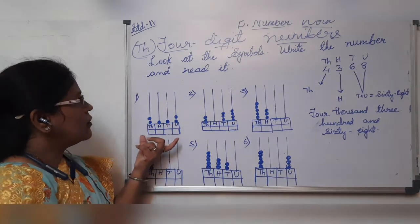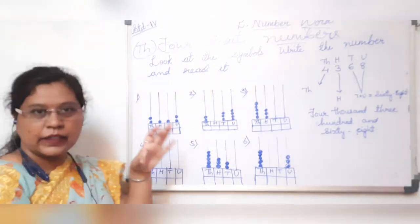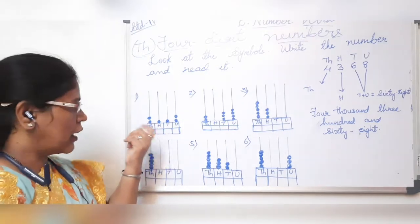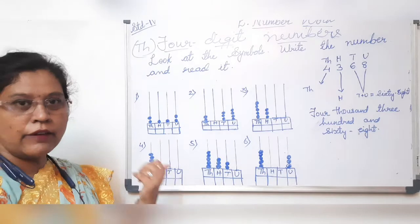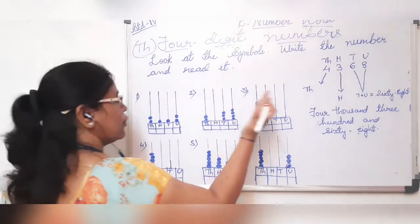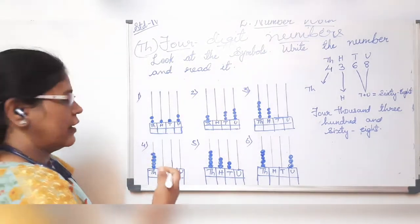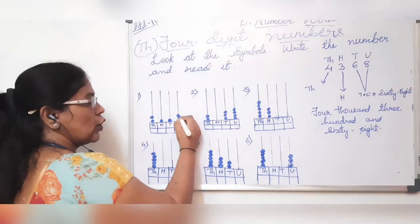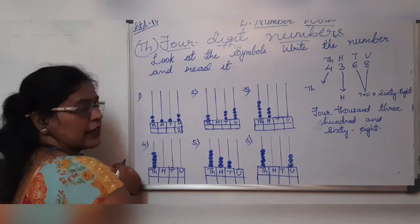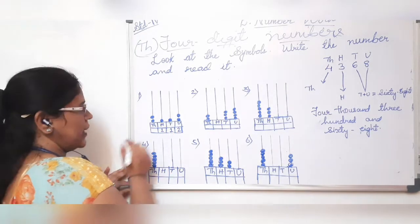Now we will start with this sum. It shows example symbols — look at the symbols, write the numbers, and read it. It is in the form of an abacus. With the beads you have to count and then write down the four-digit numbers. On the units place — I told you the place values — always you have to read and count from your right-hand side.